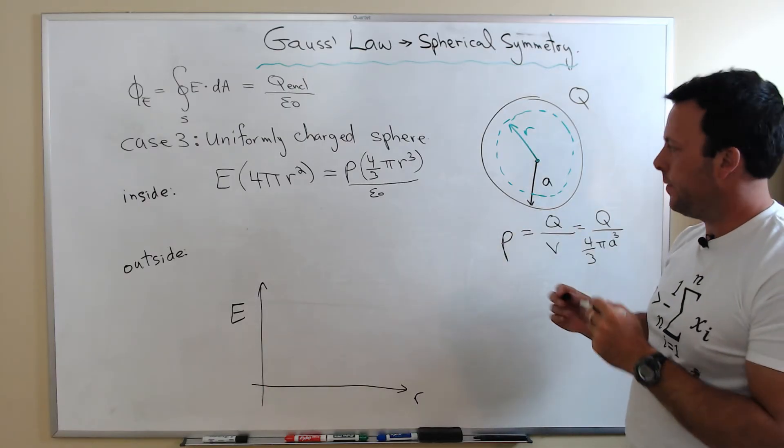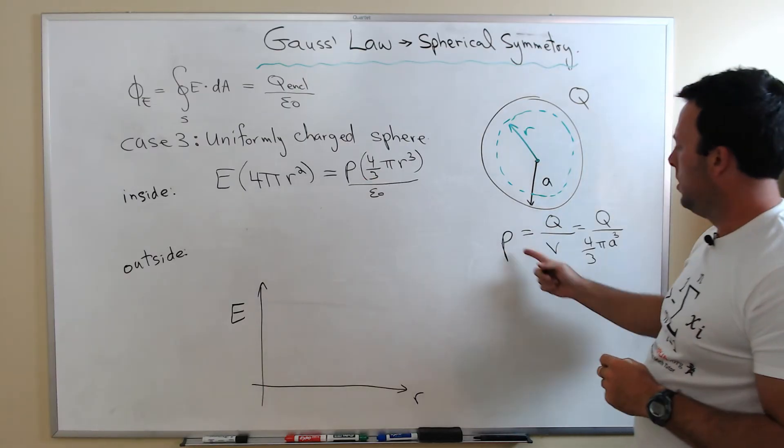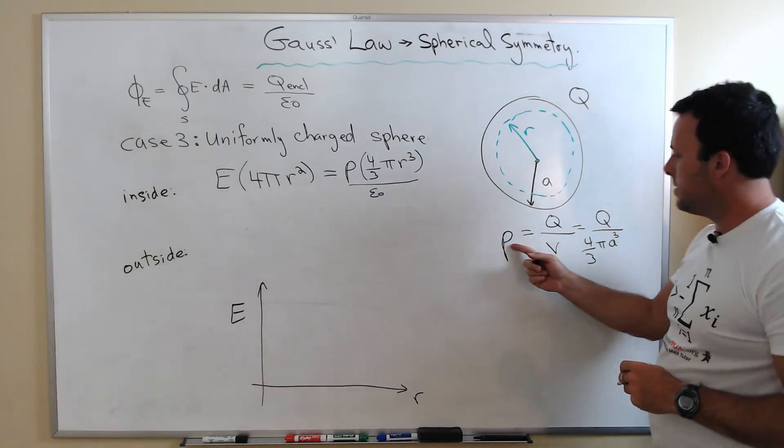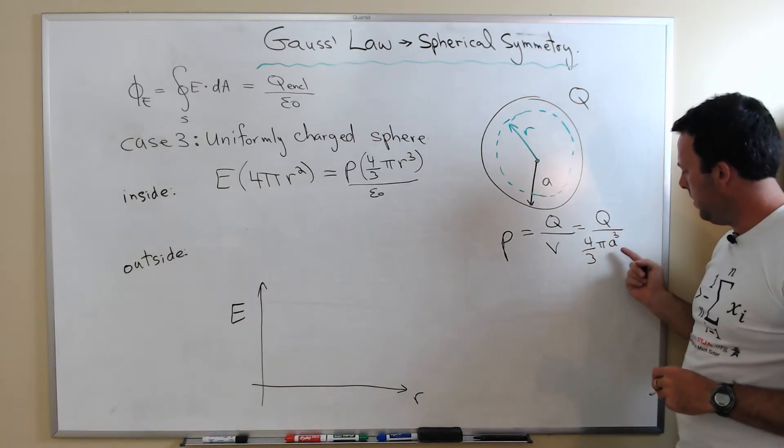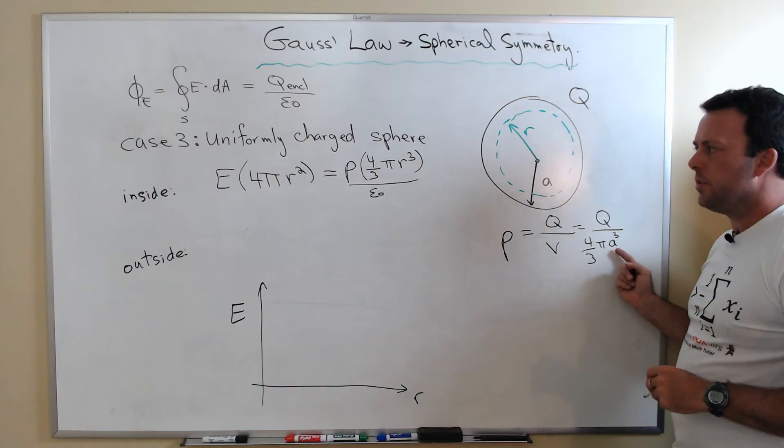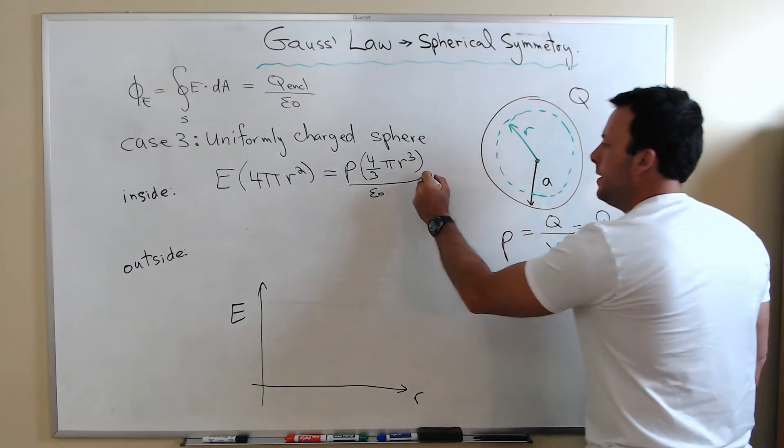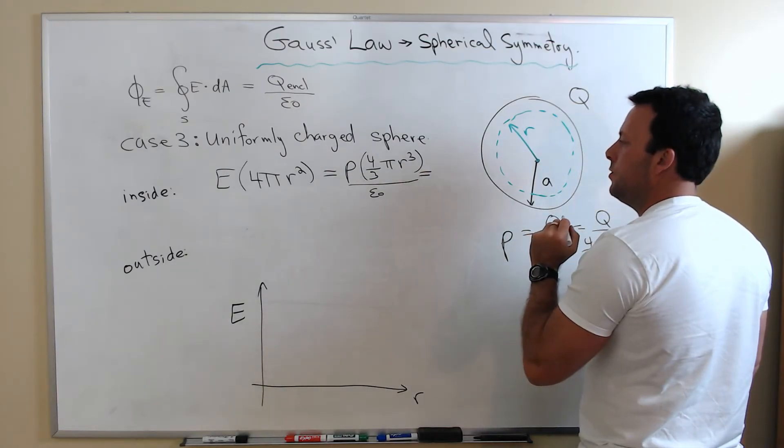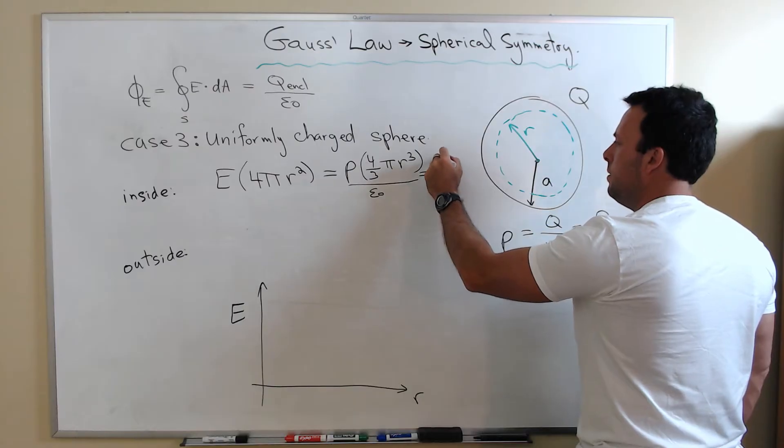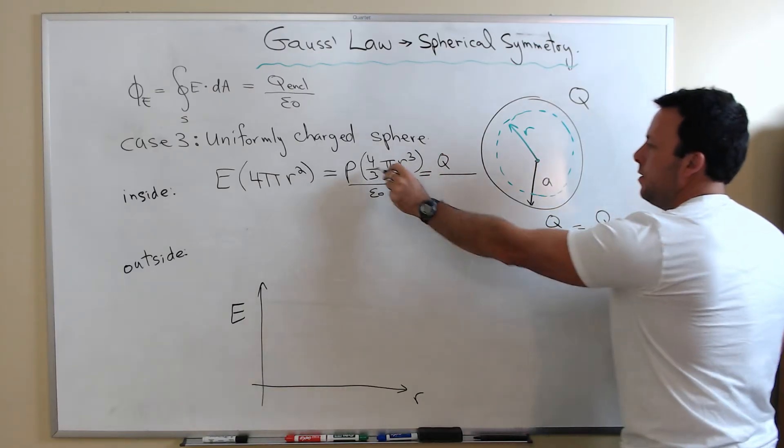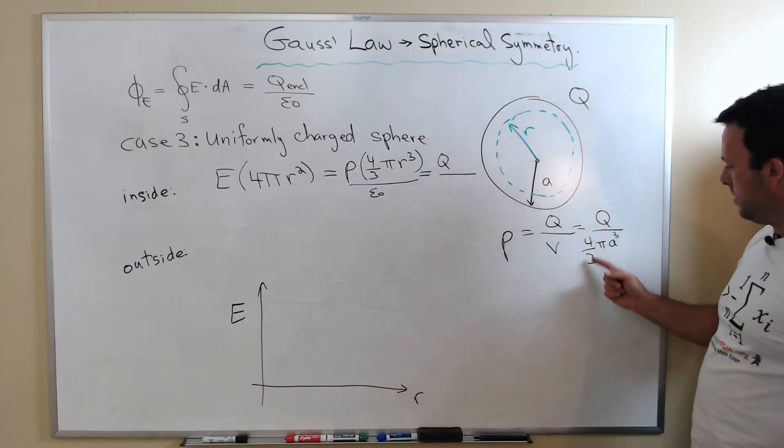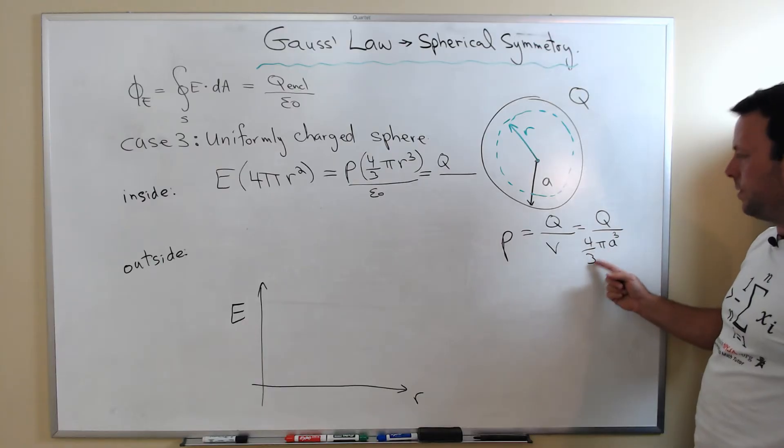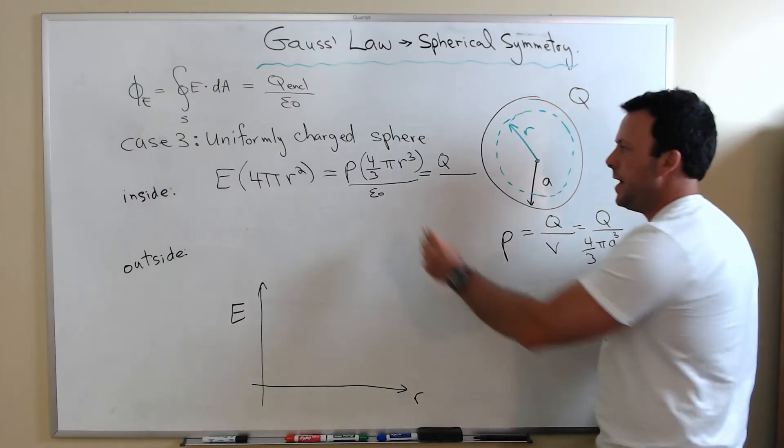I can take this one last step. I can substitute in what the charge density is. The charge density is the total charge of the sphere divided by the total volume of the sphere. At the end, what you do is you'll get Q. Now the four-thirds pi are going to cancel with this one. So this whole factor is going to leave.